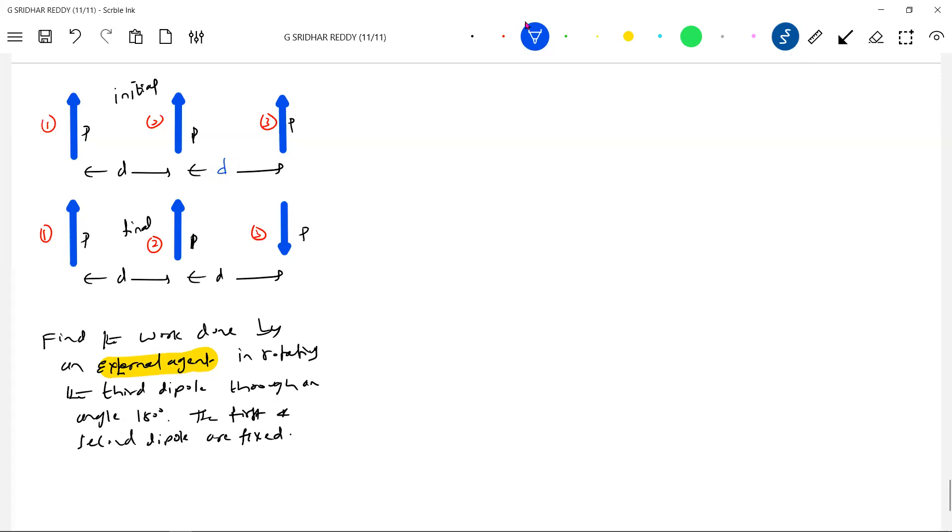Our first initial interaction potential we'll calculate, that is UI. What is this one? I think what we did for the charges here, for dipoles also we can bring this concept like an initial interaction potential between one-two, one-three, and two-three. What is between one-two, how to calculate?